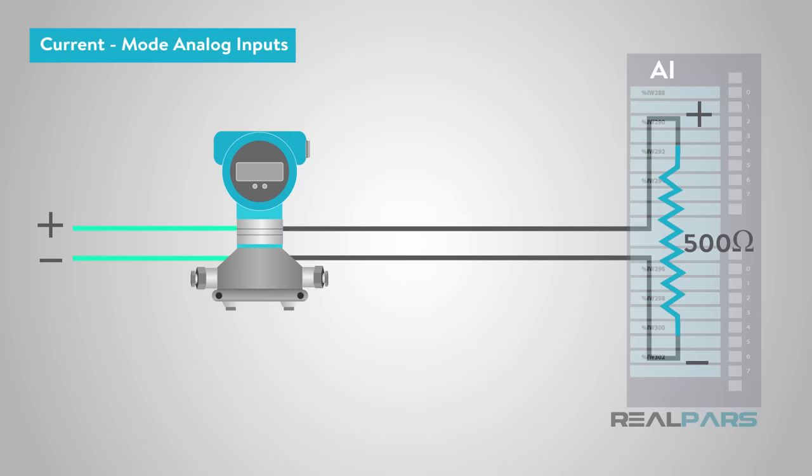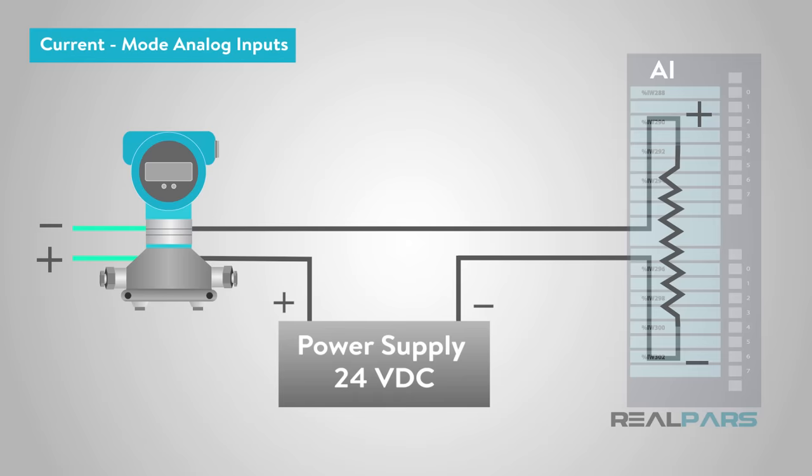Another common type of analog device uses the 4 to 20 milliamp signal as its power source, reducing the required complexity on the field end. Here is an example of a loop-powered arrangement. The main addition to the circuit is the separate power supply on the PLC end.